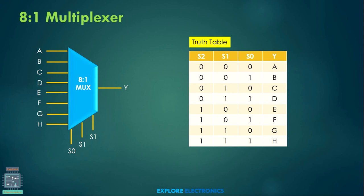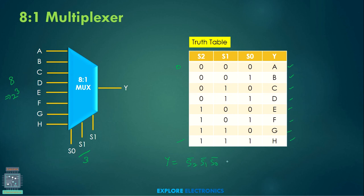Next we have the 8-to-1 multiplexer with 8 inputs. Since 8 = 2³, three select lines are required. The three select lines take values from 000 to 111, selecting each of the 8 inputs in different cases. The Boolean expression for output Y is: Y = A·S2̄·S1̄·S0̄ + B·S2̄·S1̄·S0 + … + H·S2·S1·S0. We can realize this using basic gates — that will be the gate realization of the 8-to-1 multiplexer. You can try it on your own.